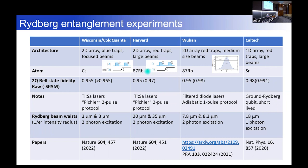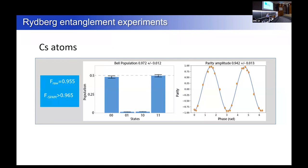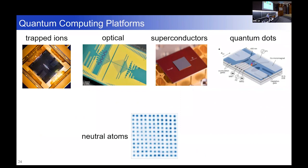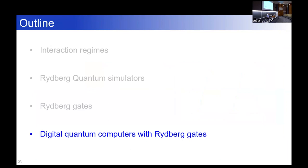This is the current state of the art experimentally with Rydberg gates. It's not yet at the fidelity level well-established with superconductors and trapped ions — about 30 times worse than the best results for trapped ions. But things will continue to improve. And now people are starting to use this to make small quantum computers using Rydberg gates.